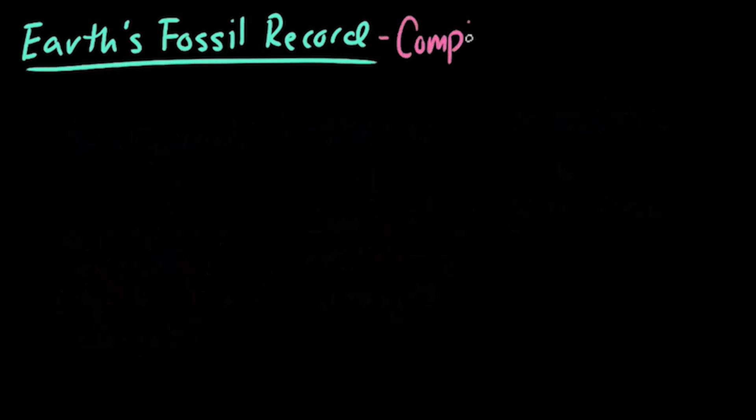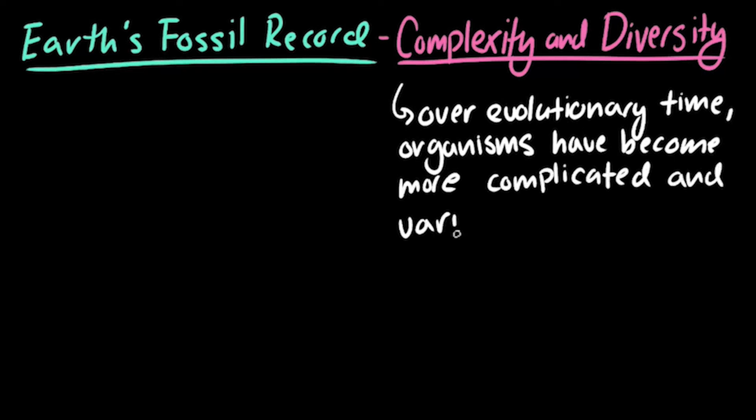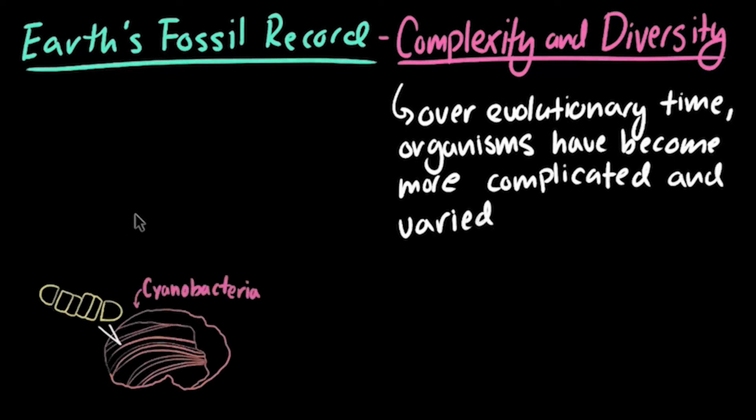First, let's take a look at the increase in organism complexity and diversity seen in the fossil record. Over evolutionary time, organisms have generally become more complicated. Some of the oldest known fossils are formations made by ancient colonies of cyanobacteria. These fossils provide evidence that single-celled organisms were living on Earth roughly around 3.5 billion years ago, and that these organisms were relatively simple, similar to the bacteria we have today.